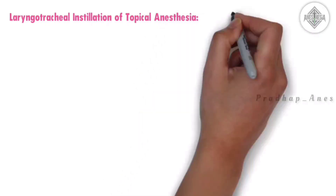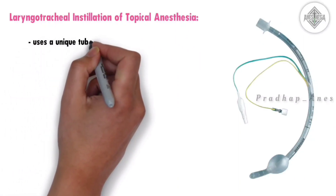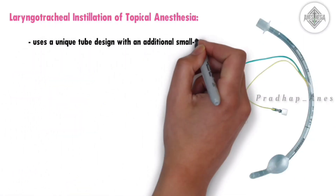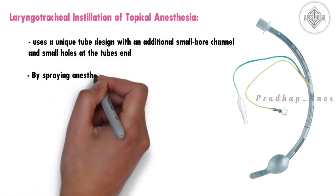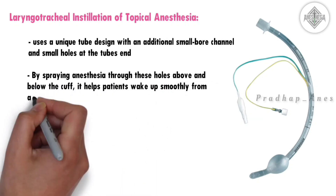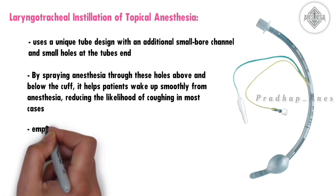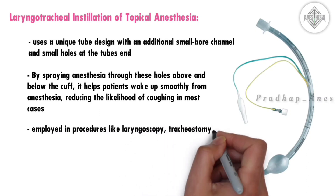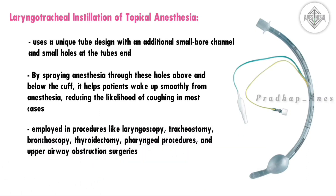Laryngotracheal instillation of topical anesthesia is a technique that uses a unique tube design with an additional small-bore channel and small holes at the tube's end. By spraying anesthesia through these holes above and below the cuff, it helps patients wake up smoothly from anesthesia, reducing the likelihood of coughing. It is employed in procedures like laryngoscopy, tracheostomy, bronchoscopy, thyroidectomy, pharyngeal procedures, and upper airway obstruction surgeries.